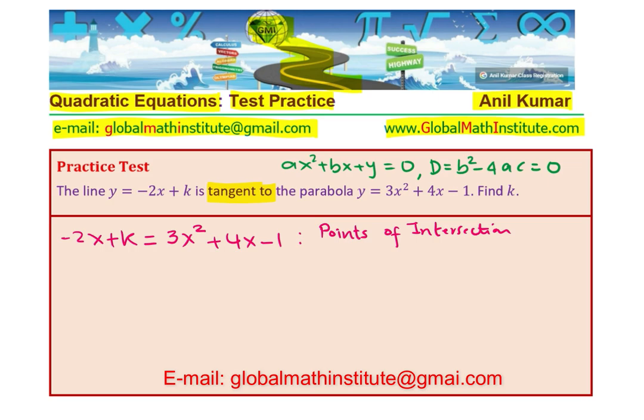Let's do the needful. So let's take all the terms to the right hand side, so we have here 3x² plus 4x minus 2x comes here with plus 2x, and then we have minus 1 and minus k.